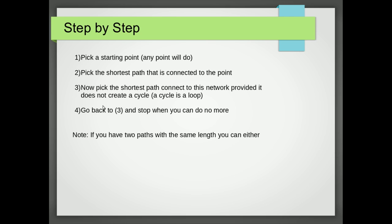Two things to note: sometimes we'll have two paths of the same length, and it doesn't matter which path we pick. The weight of the minimum spanning tree is the length of all the paths added together. Also note that we're only interested in finding one of the possible minimum spanning trees. There can be several, and picking different paths of equal length can give different trees, but they will have the same total length.